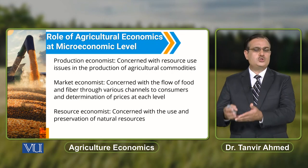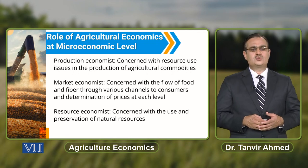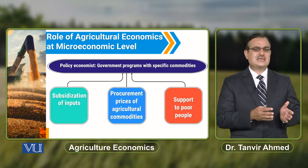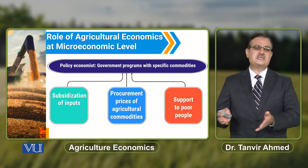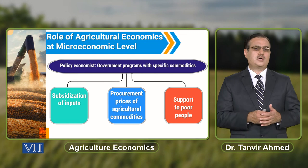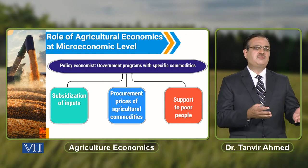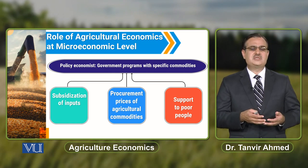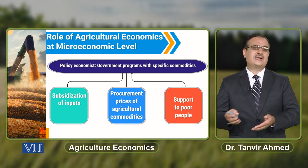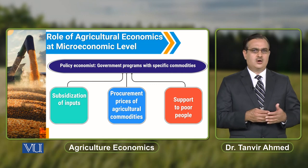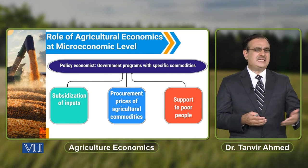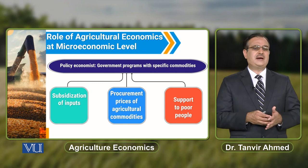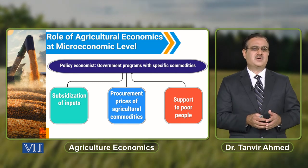The resource economist will also try to preserve the natural resources. When we talk about the policy economist, these are basically government programs that relate to specific commodities. The objective of these government programs is usually to enhance the income of the farmer, which can be done by providing subsidies on inputs — such as subsidies on the use of fertilizer or seeds being used by the farmer.